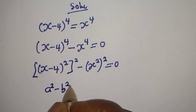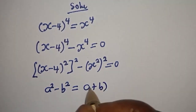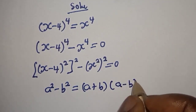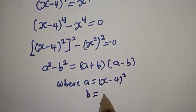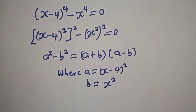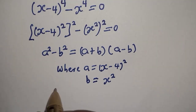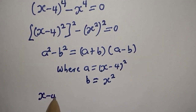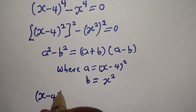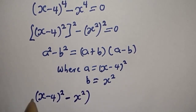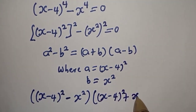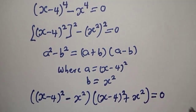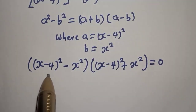This is in the form of a difference of squares. If you have a squared minus b squared, this is equal to a plus b multiplied by a minus b, where a is equal to s minus 4 squared and b is equal to s squared. Substituting, you have s minus 4 squared minus s squared, multiplied by s minus 4 squared plus s squared, everything equal to zero.